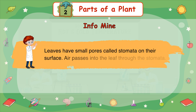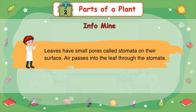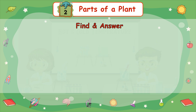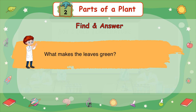Leaves have small pores called stomata on their surface. Air passes into the leaf through the stomata. What makes the leaves green?